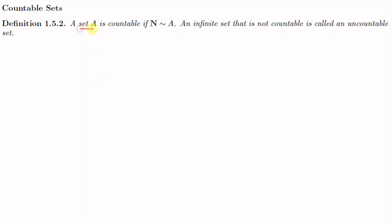A set A is countable if N is similar to A. N similar to A means there is a one-to-one correspondence between N and A — that means there exists a function f from N to A which is one-to-one and onto. An infinite set that is not countable is called an uncountable set.